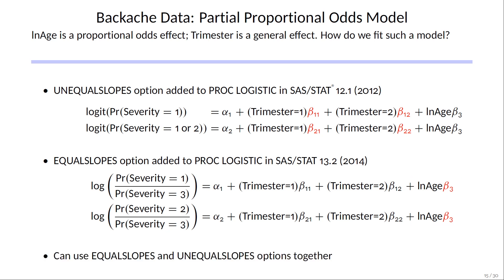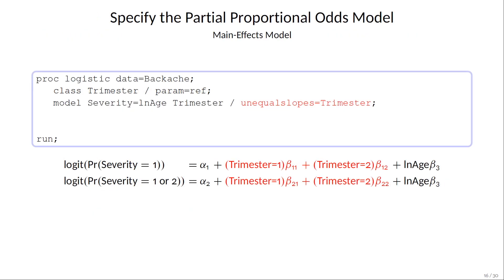And you can use these two options together. So let's start with our default proportional odds model program, and add unequal slopes equals trimester, so that trimester now has a separate set of slope parameters for each of the two response functions. We now have seven parameters in the model, and we'll compute odds ratios as well.